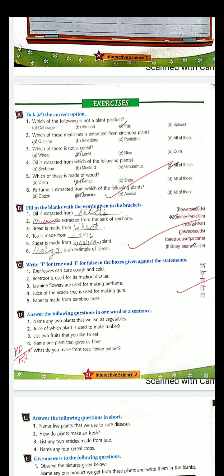Which of the following is not a plant product? Options are cabbage, almond, spinach and egg. So do you remember - any plant gave us cabbage? Yes, it is a vegetable. Then almond? Yes, we studied these are given by plants.